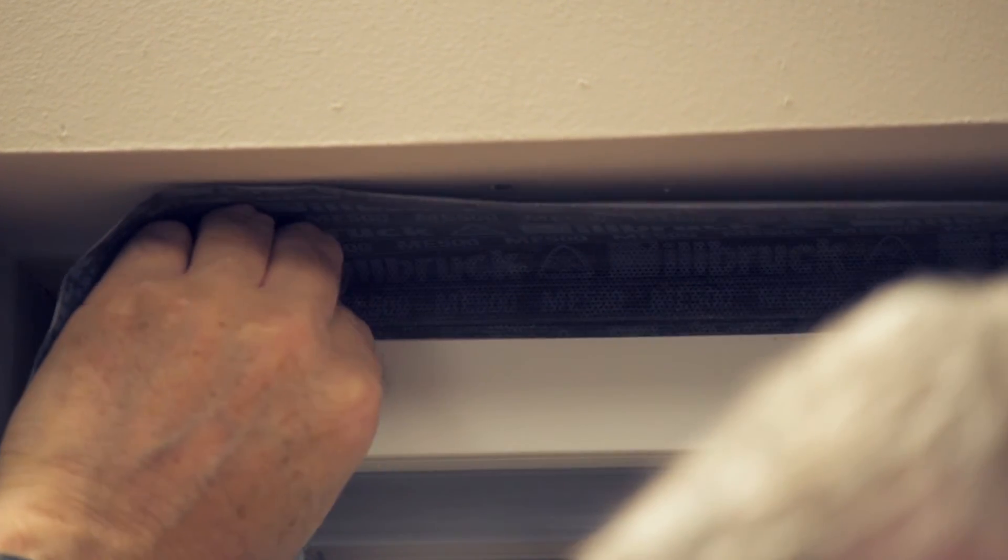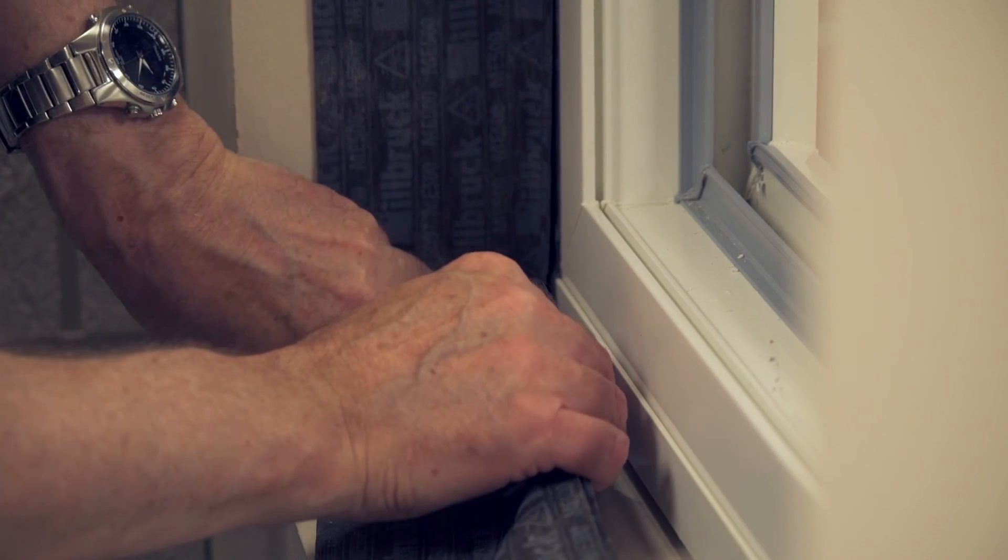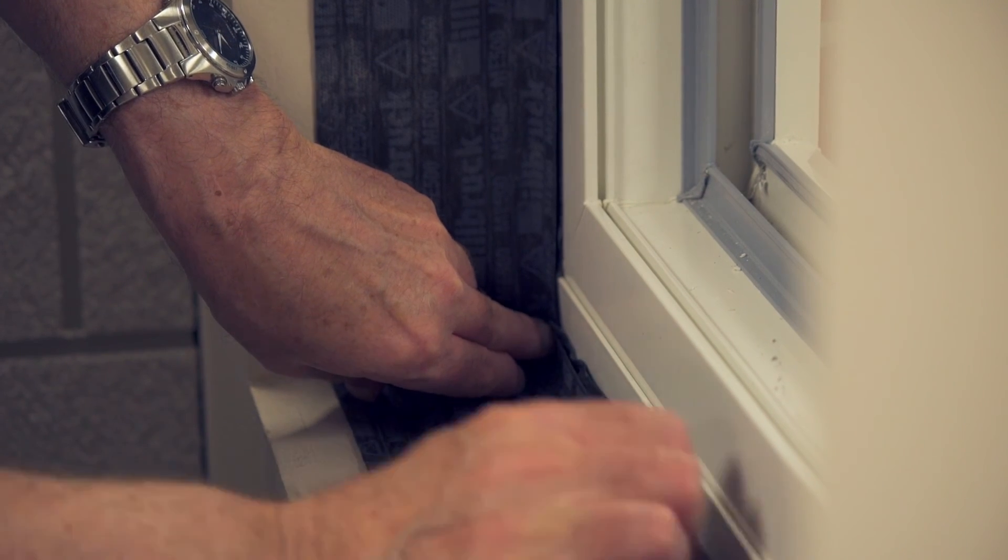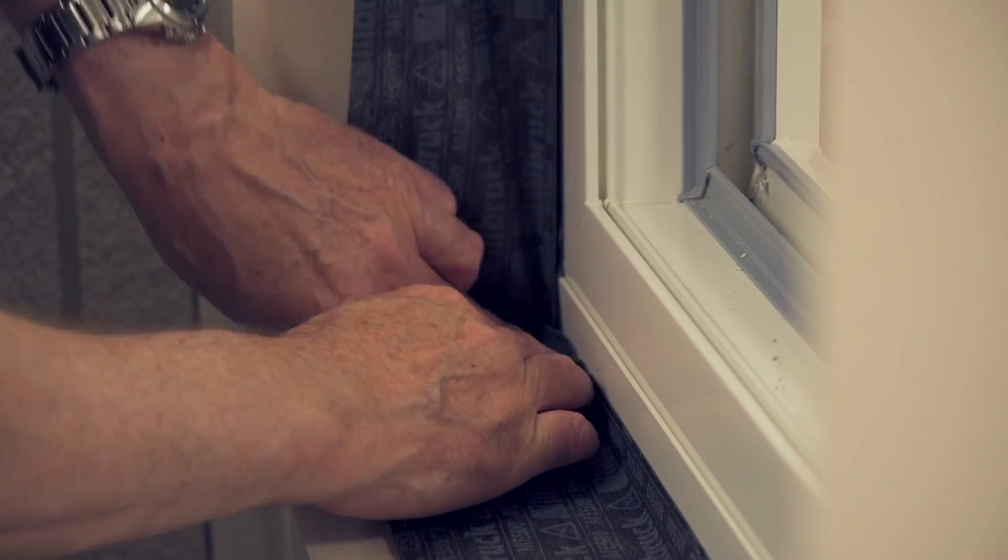On this E version of the membrane, the two self-adhesive strips are on the same face. Take care to ensure that the membrane is tight against the corners of the reveal and continue around the frame.